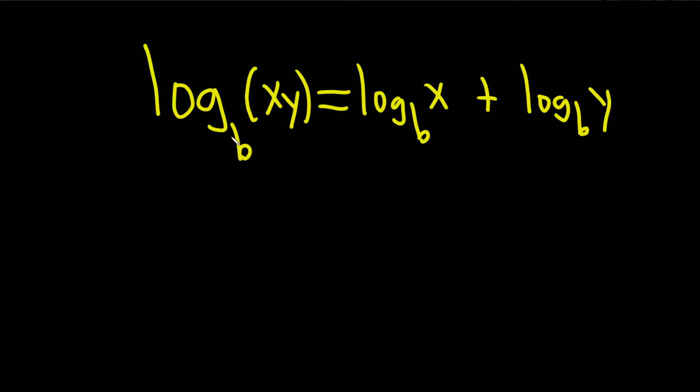Hi everyone. So in this video we're going to prove the product rule for logarithms. Here x and y are positive numbers and b is a base, so it's positive and not equal to 1. Let's go ahead and go through a quick proof of how to verify this property.